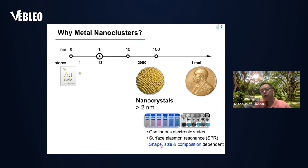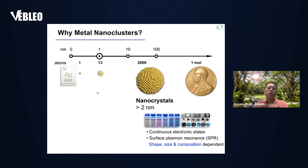As a materials chemist, we can control the SPR properties by controlling the shape, size, and composition. If we still remember our high school chemistry, a single gold atom has discrete electron states. The next question we ask is: what happens during the transition between a single gold atom with discrete electron states and thousands of gold atoms with continuous electron states? That transition is the material I will discuss today.